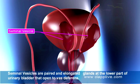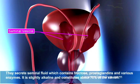Seminal vesicles are paired and elongated glands at the lower part of the urinary bladder that open to the vas deferens. They secrete seminal fluid which contains fructose, prostaglandins, and various enzymes. It is slightly alkaline and constitutes about 70% of the semen.